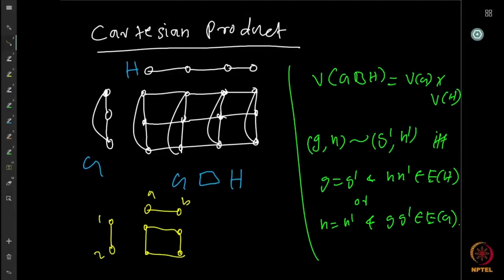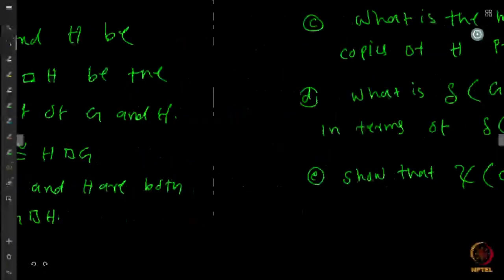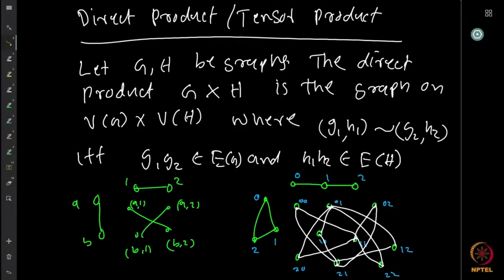Once we have the Cartesian product, we can also define more products. The next one is called the direct product or tensor product. Given two graphs G and H, the direct product is again defined on the Cartesian product of the vertex sets V(G) cross V(H), and adjacency is defined as follows: if (g1, h1) and (g2, h2) are vertices in the product graph, there is an edge between them if and only if both g1g2 is an edge in G and h1h2 is an edge in H.